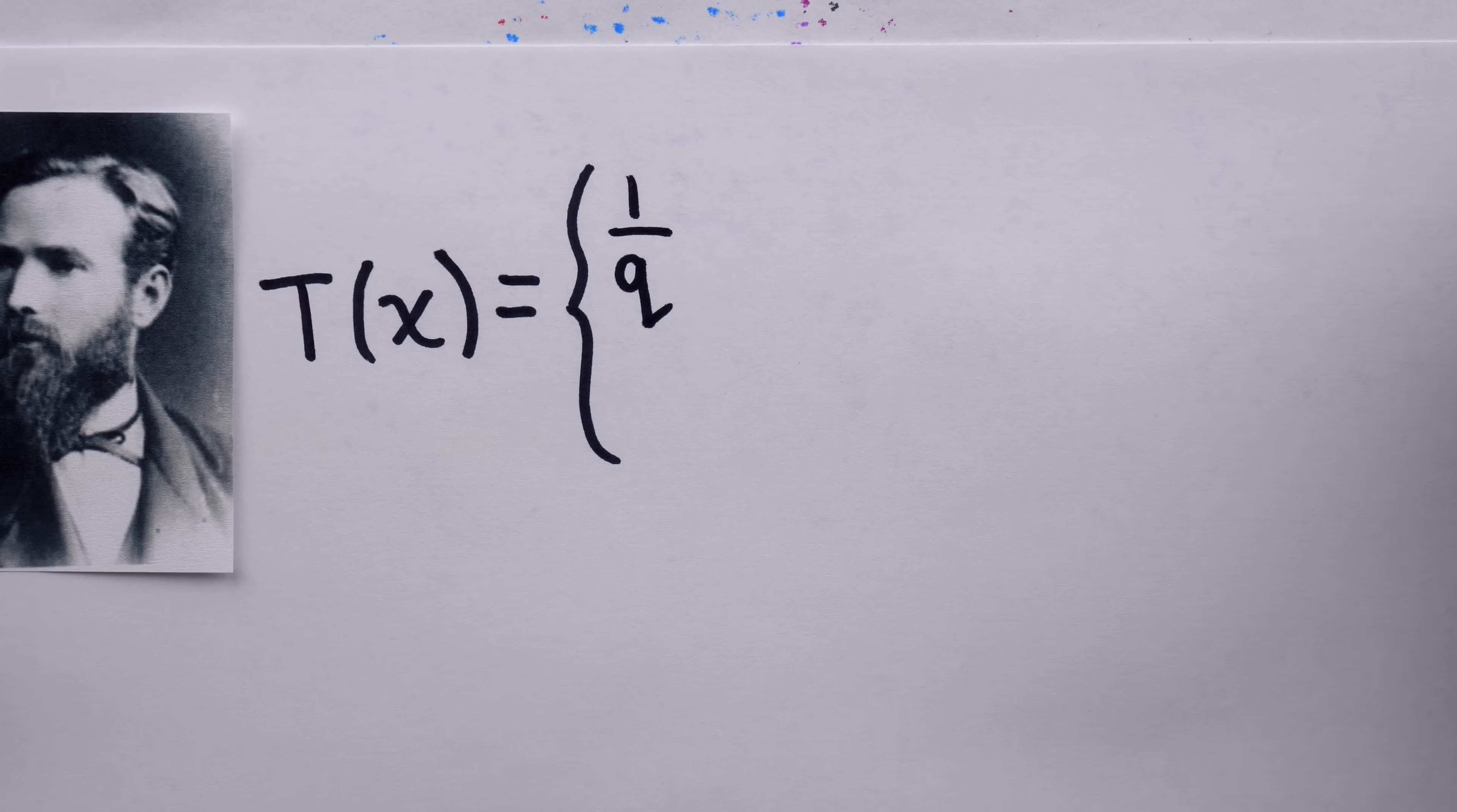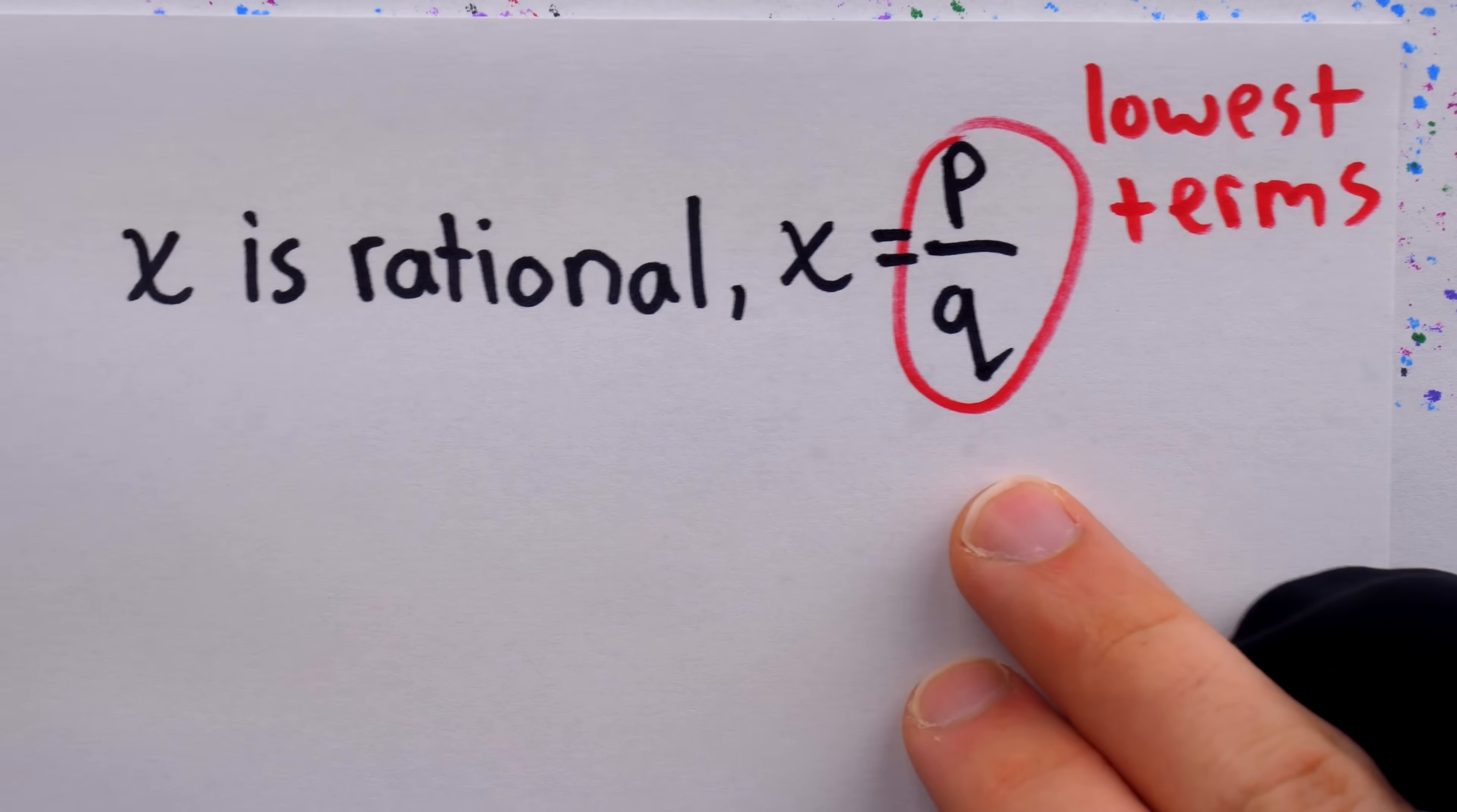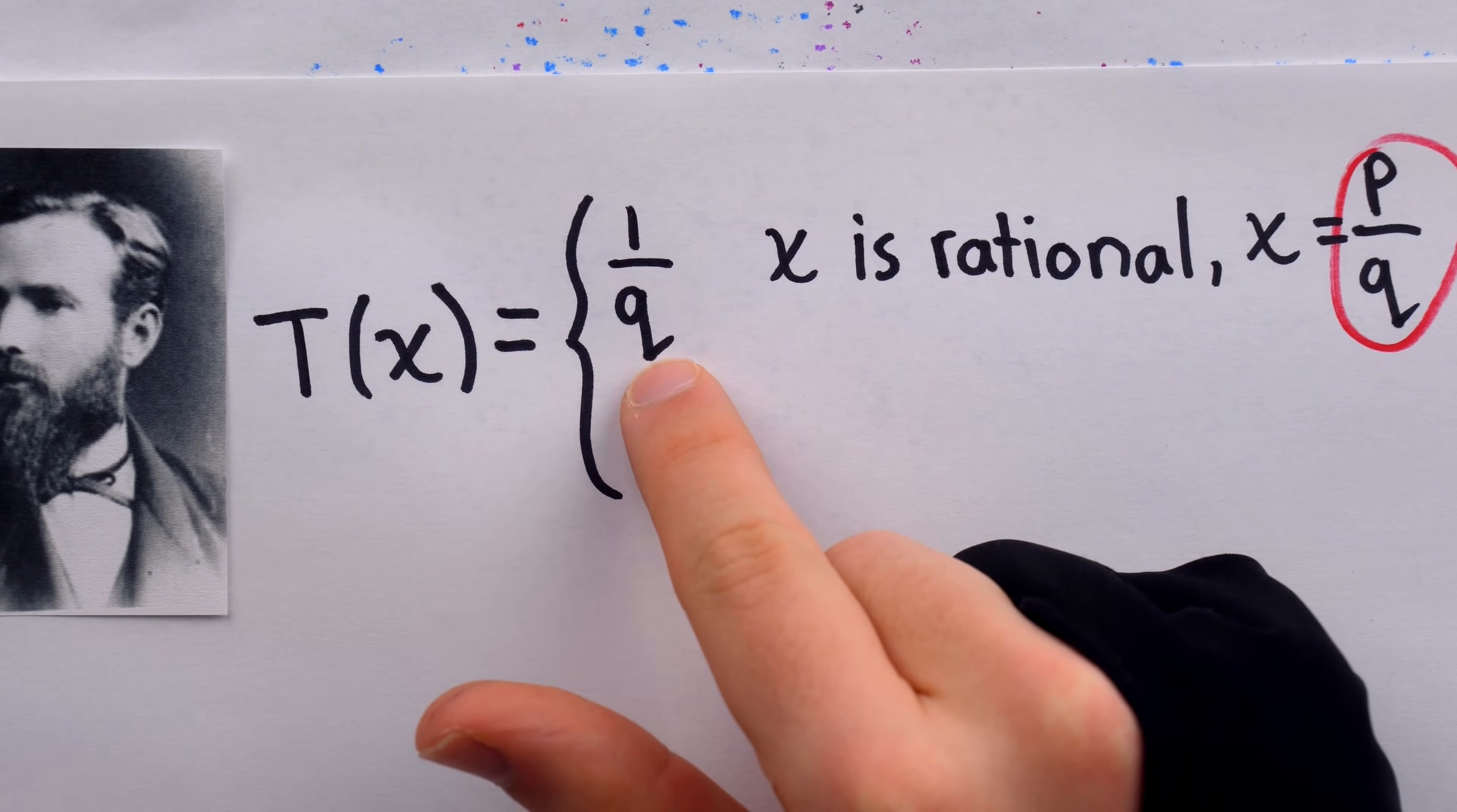It's defined in a piecewise manner, meaning that its behavior depends on what the input is. The function will output one over q, if x is a rational number, where x is equal to p over q, which must be a fraction that's fully reduced. So if we plugged two-thirds into Tomé's function, the output would be one over three.